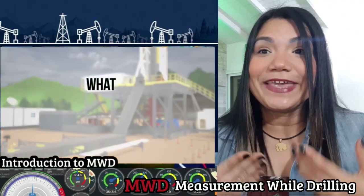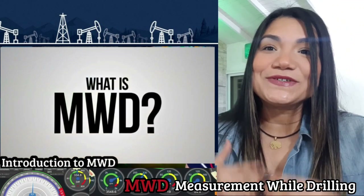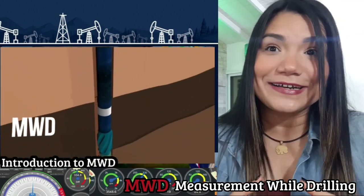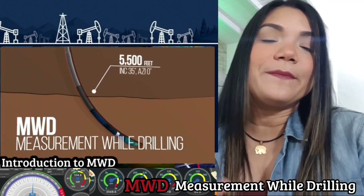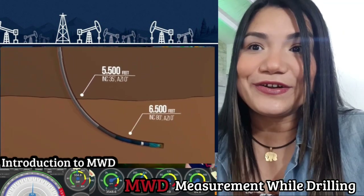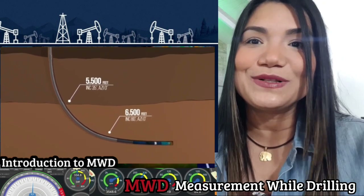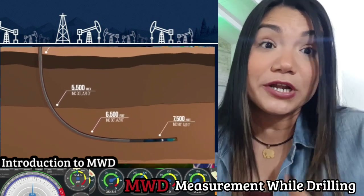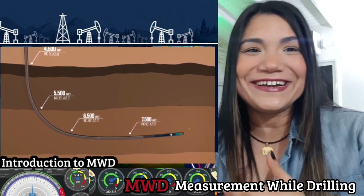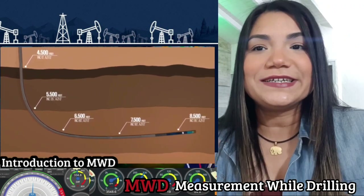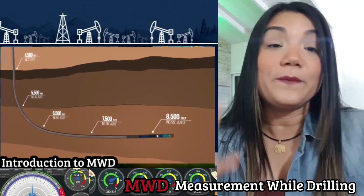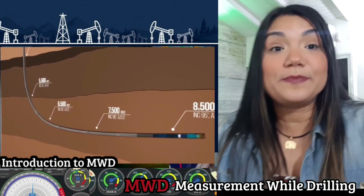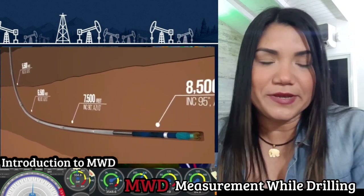Let's talk a bit about the MWD tool. The MWD tool is an electromechanical system which consists of a directional sensor package, a mud pulse generator, and a power source, which can be a battery or turbine generator assembly. The MWD tool assembly is placed in a monel — a non-magnetic collar — to reduce interference with the magnetometers used for azimuth determination measurement. The MWD tool is usually placed above the drilling motor in the BHA.